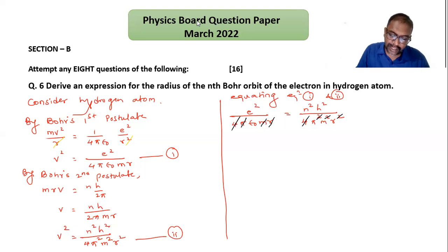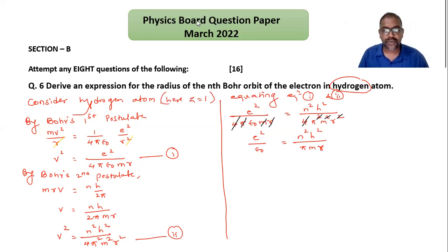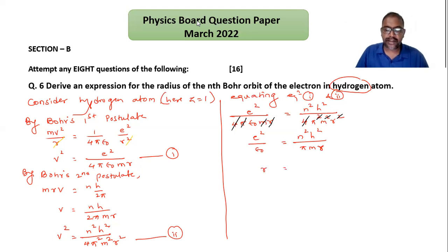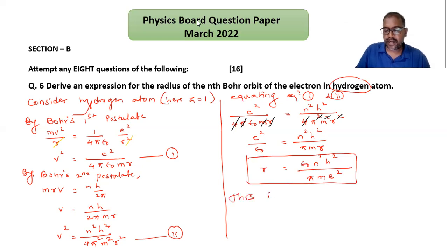After cancellation, we get e² on one side with ε₀ remaining, and n²h² divided by πmr on the other side. Since z = 1 for the hydrogen atom, we transfer r and ε₀ to get: r = ε₀ n²h² divided by πme². This is the expression for the radius of the nth orbit in hydrogen atom.